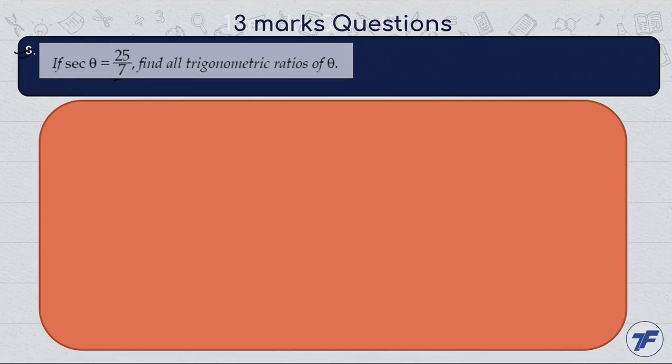Now the next question: if sec θ is equal to 25 by 7, find all trigonometric ratios of θ.